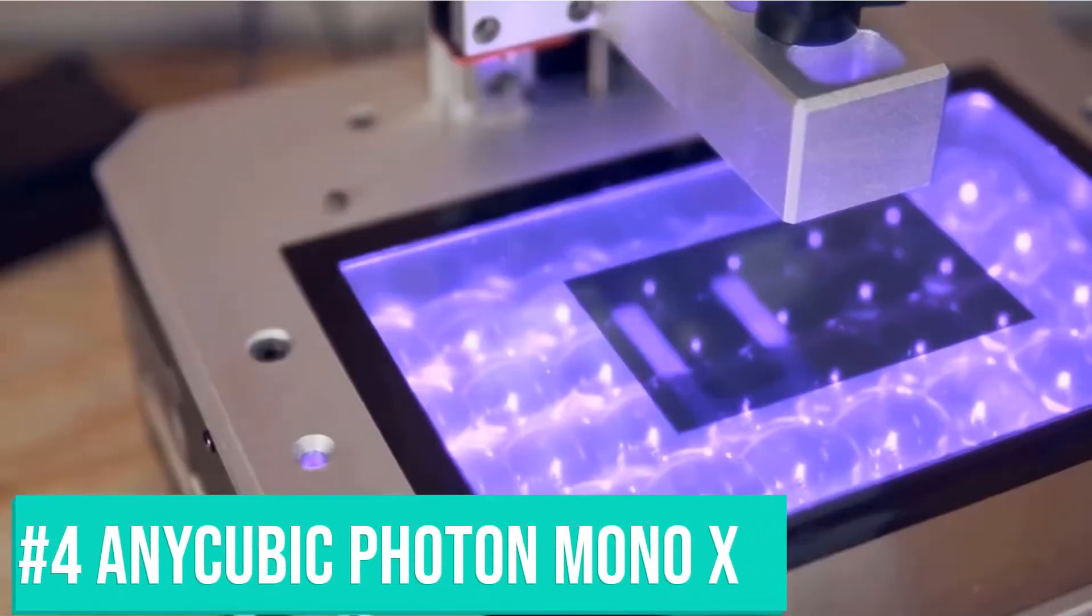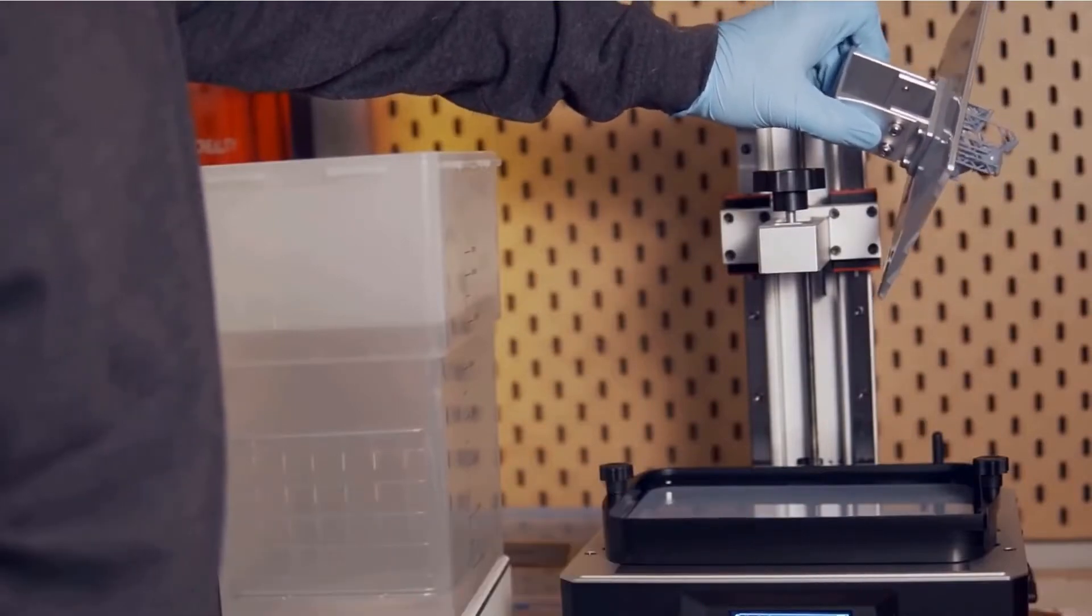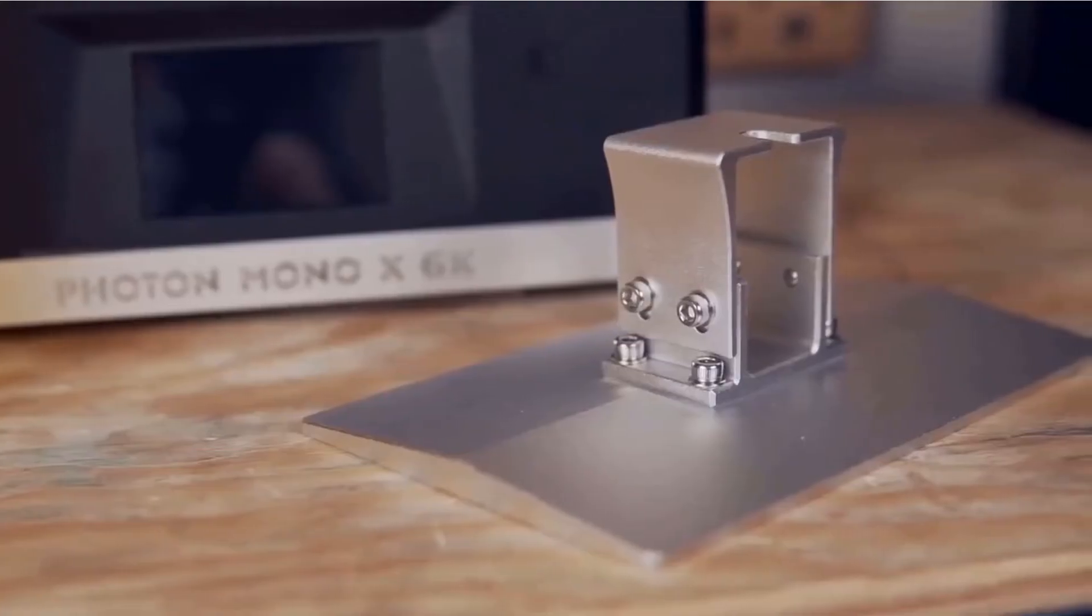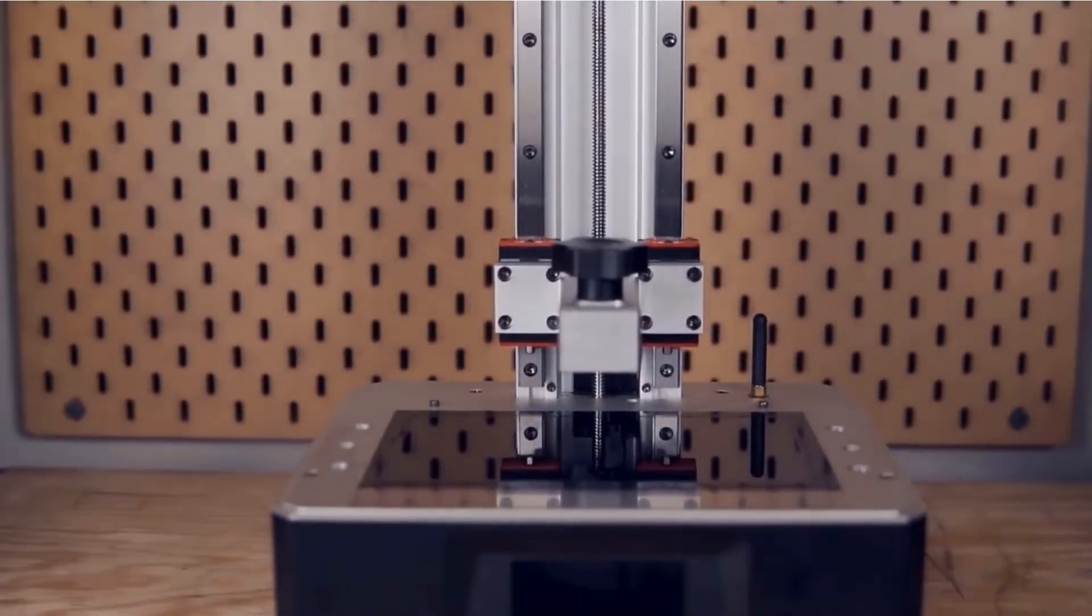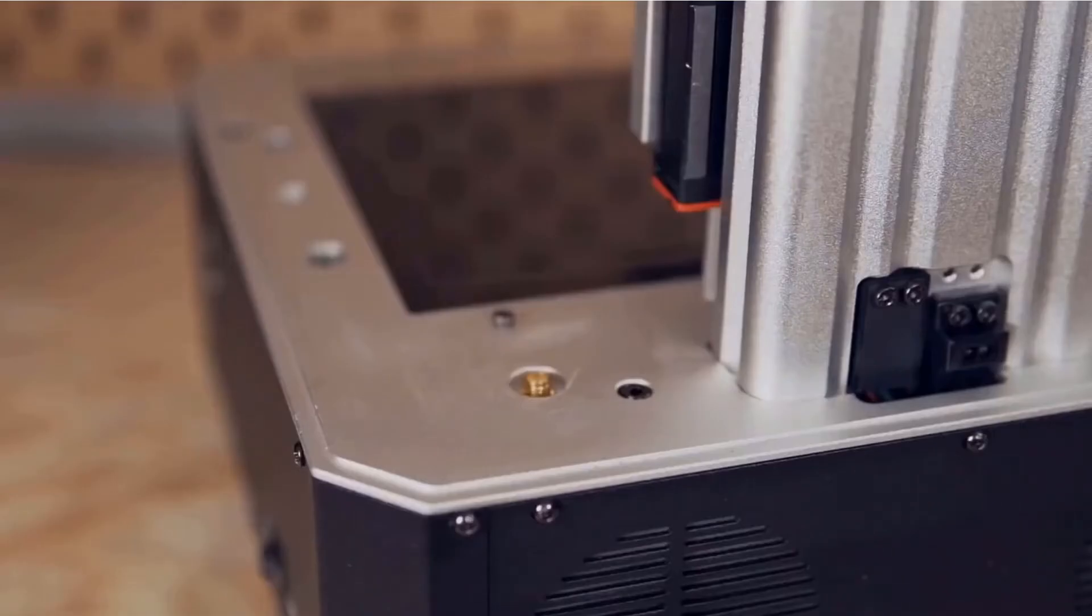The fourth one on the list is the AnyCubic Photon Mono X 3D Printer. With 3x fast printing and a 4K monochrome screen, the Photon Mono X single layer exposure only takes 1-2 seconds, and the printing speed is